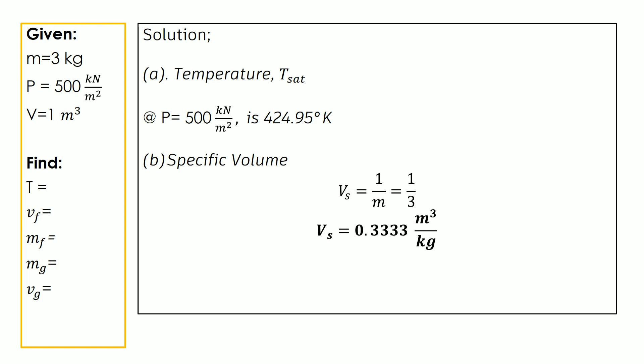Now let's proceed to finding the specific volume. To find the mass of water vapor and the volume of the substance, we must first calculate the specific volume. The formula for specific volume is the total volume divided by the mass. With a volume of one cubic meter and a mass of three kilograms, the specific volume is 0.333 cubic meters per kilogram.